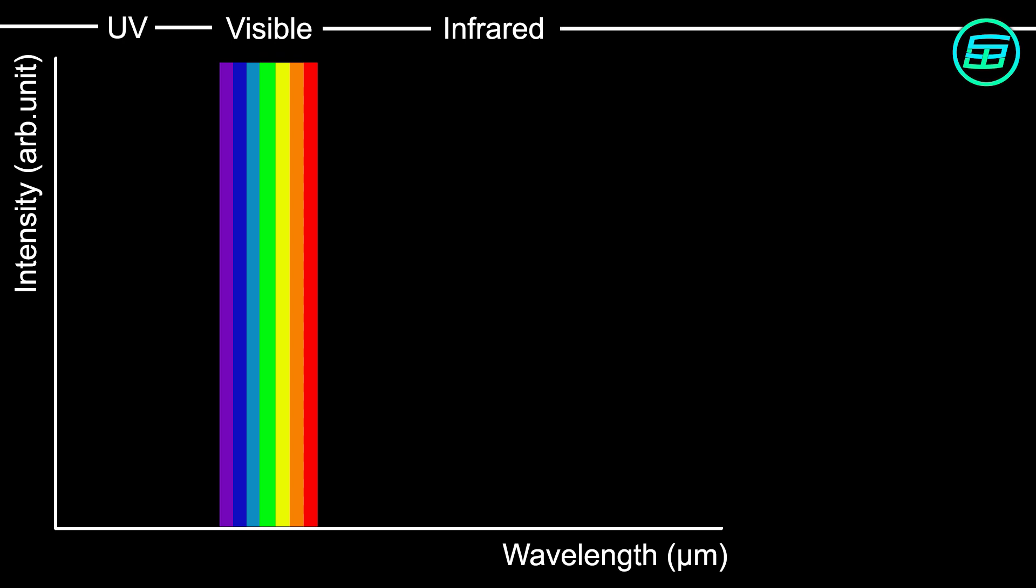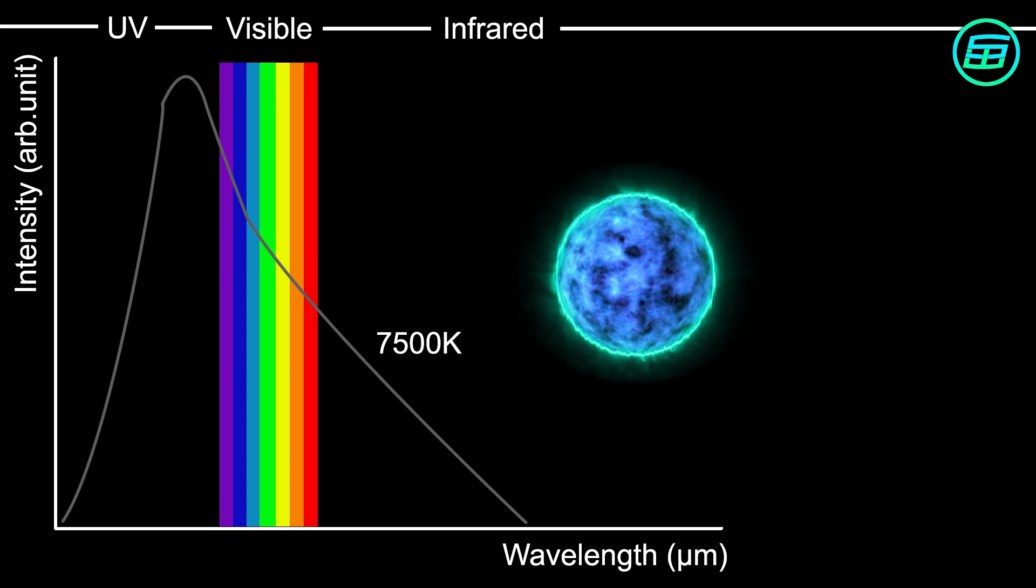Extremely hot stars emit all colours too, but mostly they emit blue light. Our eyes can detect blue light easily, because they have special cells that are sensitive to blue light. So the hottest stars appear blue.